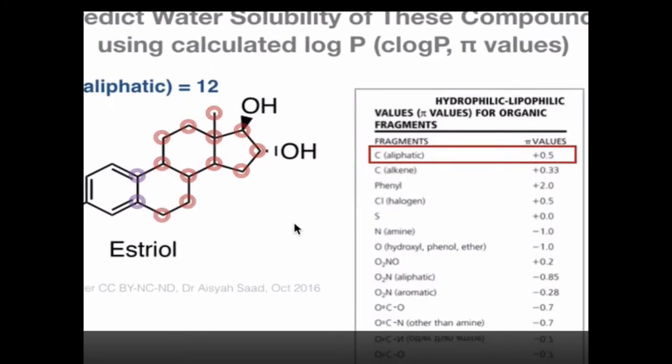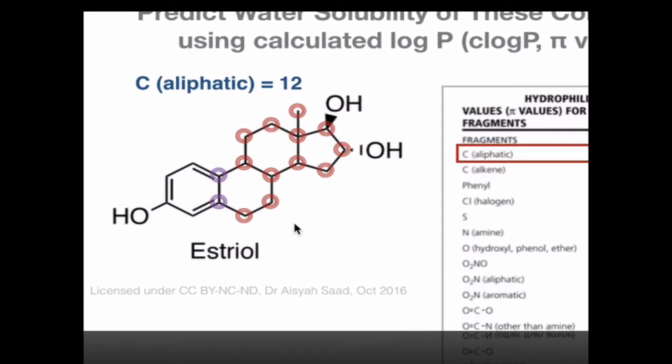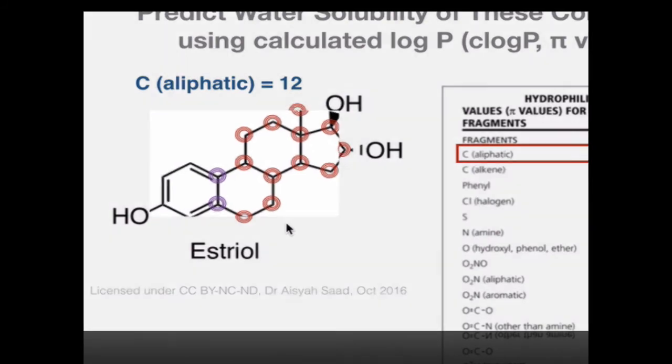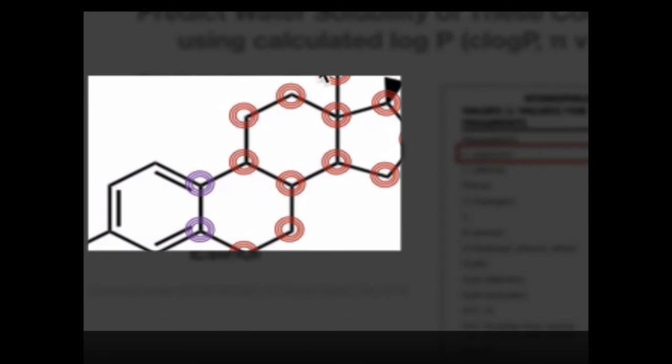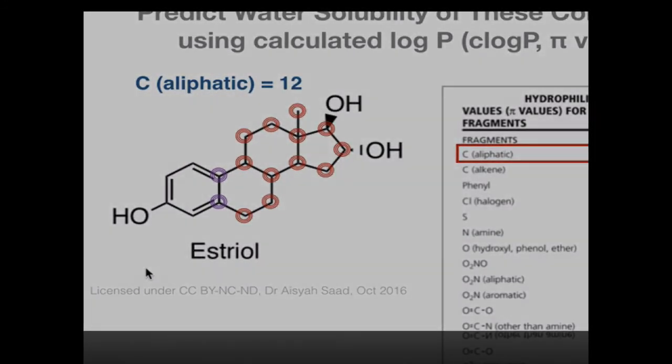In this case, if I just zoom down to the molecule, if you take the carbon for the aliphatic chain here, there should be 12. You can try to count on your own. The carbons here, the ones in purple, are not counted as aliphatic because they are connected to the aromatic ring.